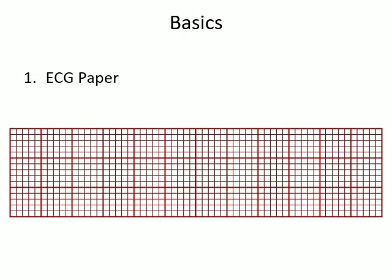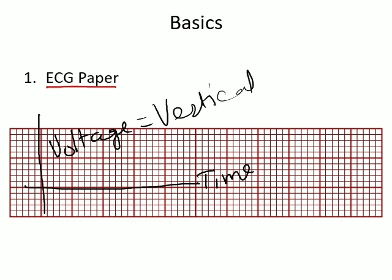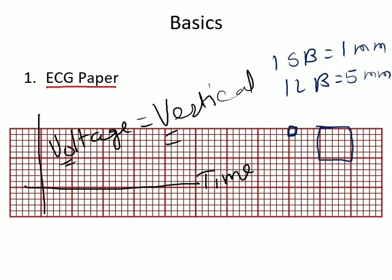Let's talk about the most basic thing in recording an ECG — the ECG paper. As you can see in this diagram, it is a two-dimensional structure: the vertical dimension records voltage and the horizontal dimension records time. A helpful mnemonic is that both 'vertical' and 'voltage' start with V. The paper has small boxes and large boxes — one small box equals 1 mm, and one large box equals 5 mm in either direction.